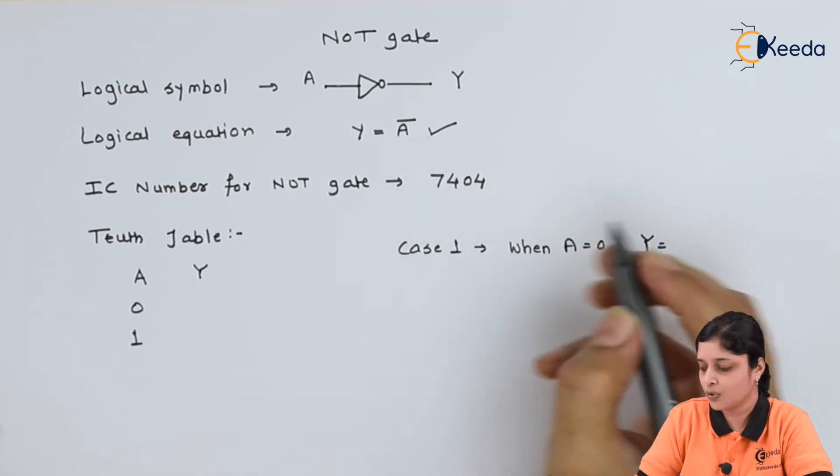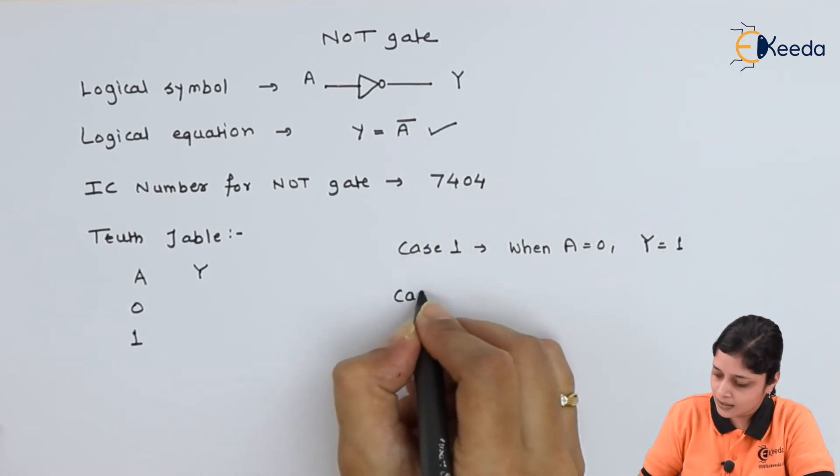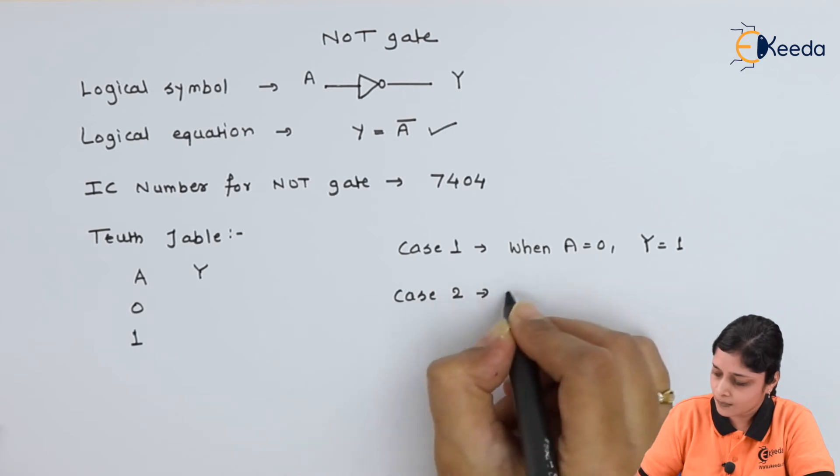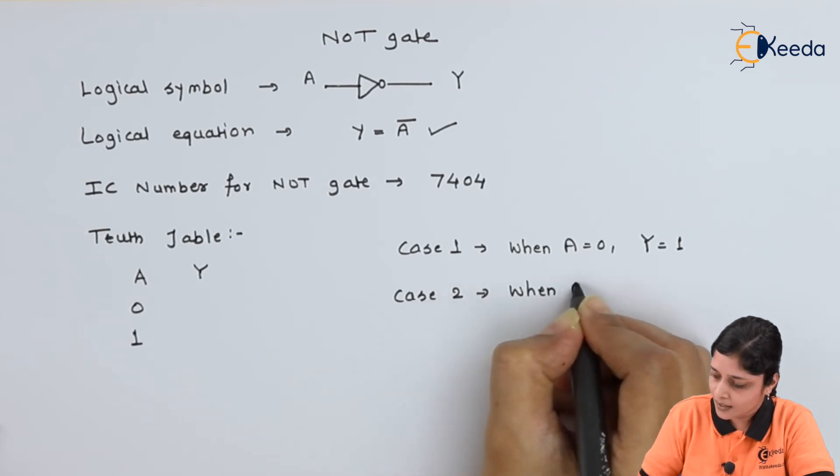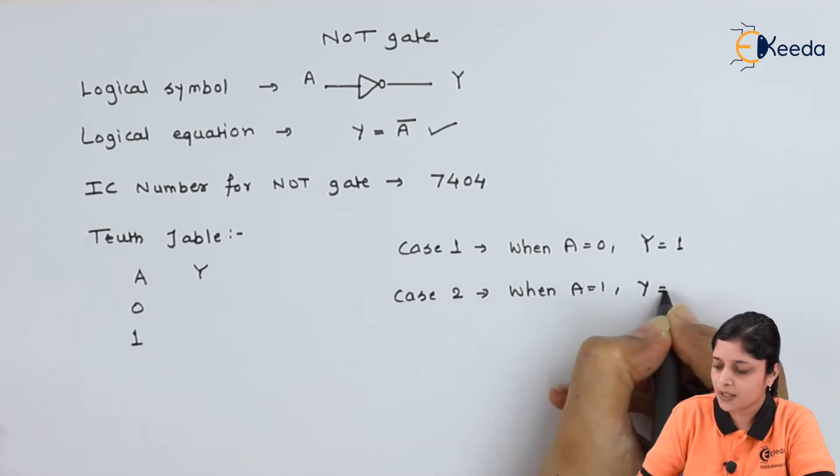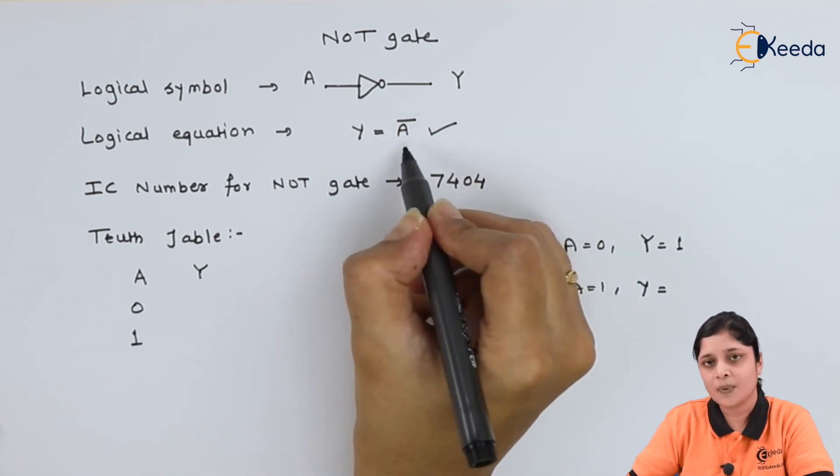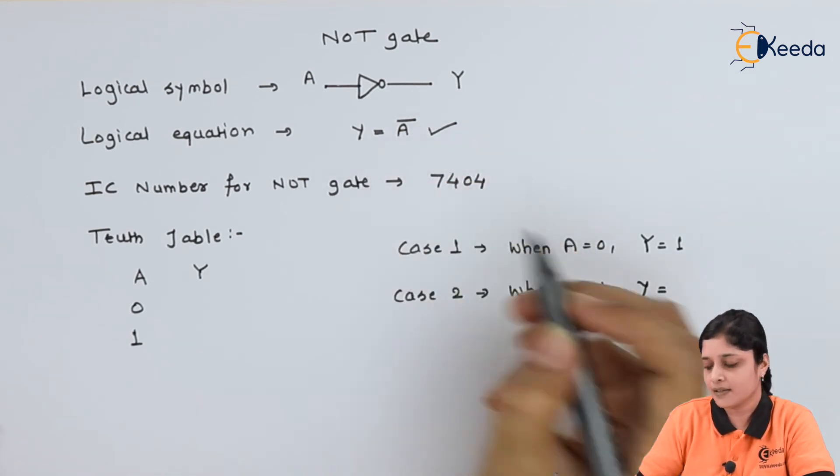Then case 2, when A equals to 1, what will be the Y? When A equals to 1, complement of 1 always is 0.